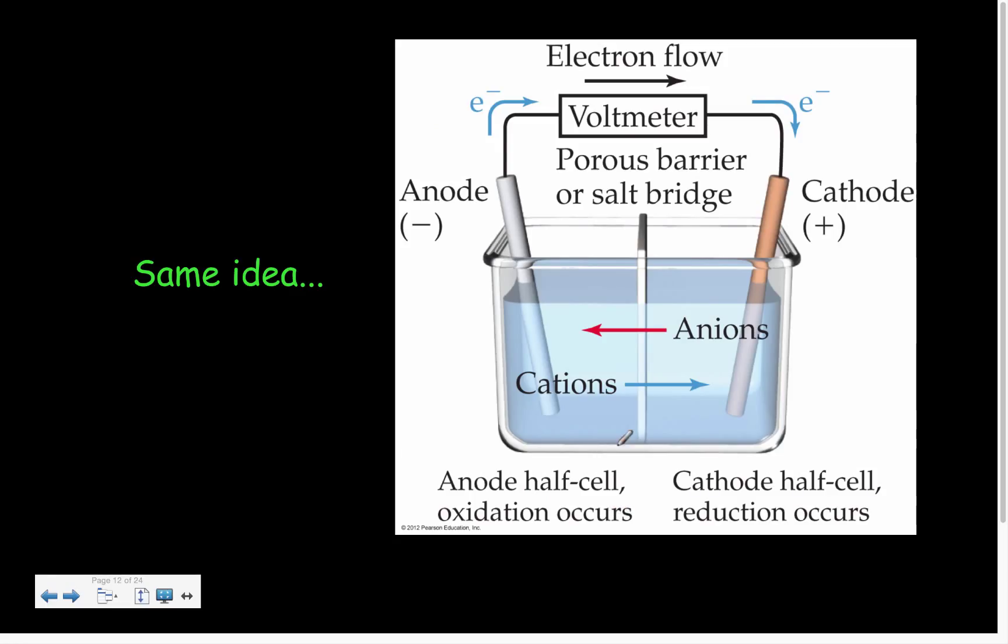Another way to set that up would be that we could have our anode - the electrons are produced, they flow through the voltmeter, they come down through the cathode. And we still have the concept of a half cell on each side. But here, instead of having a salt bridge, instead of having a different salt that has to flow left and right to maintain electrical neutrality, we can simply have our components separated by something that is porous.